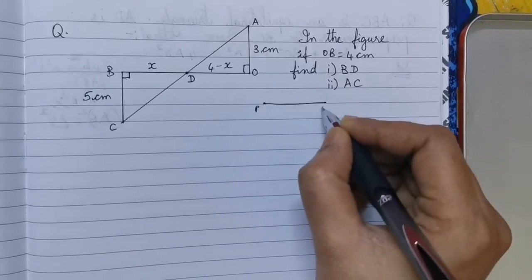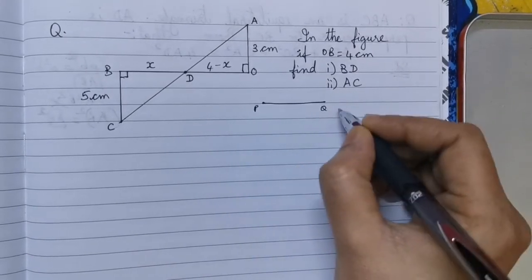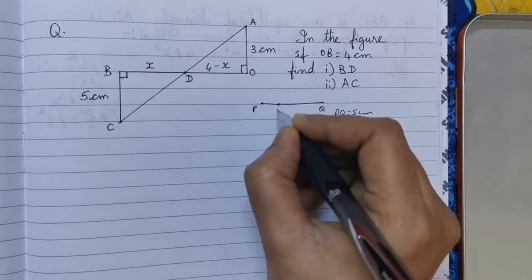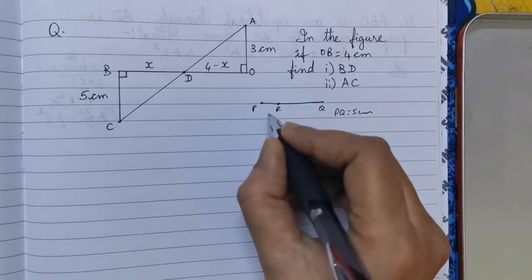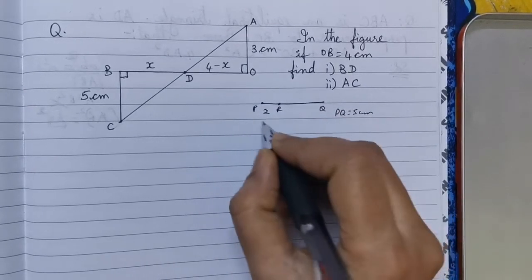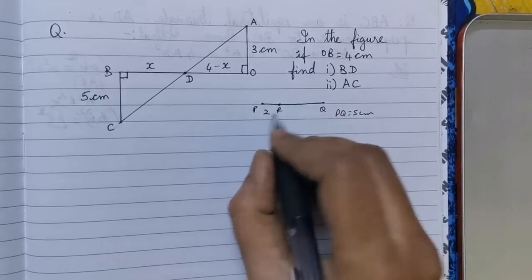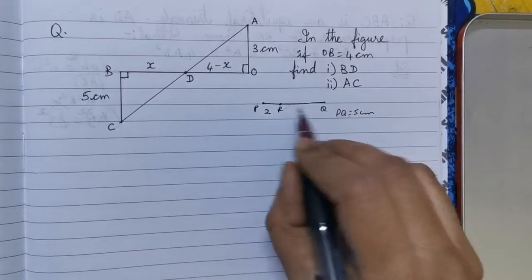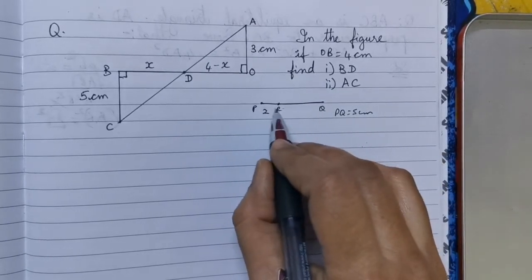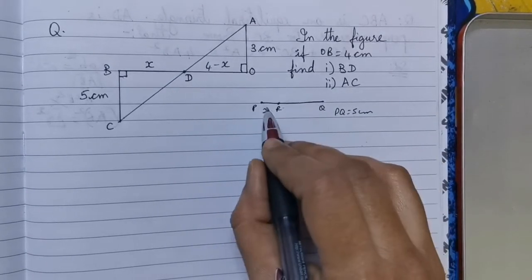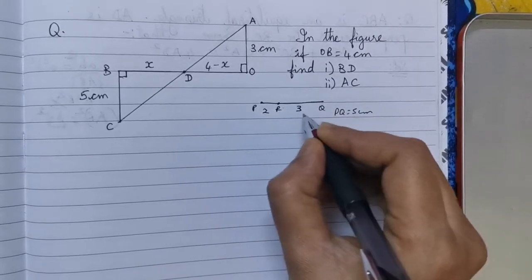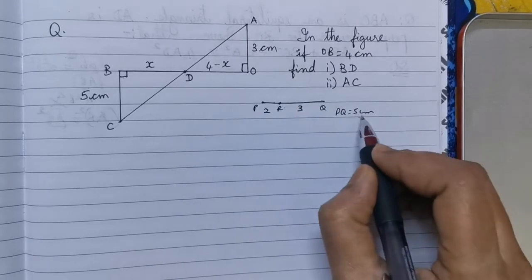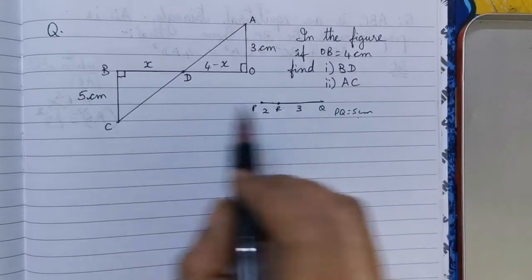For example, I have a line PQ which is equal to 5 cm and I have a segment PR which is 2 cm. If PR is 2 cm, RQ will be the remaining part of 5 cm. Out of 5 cm, this part is gone — 5 minus 2 which is 3 cm. So this 2 cm plus this 3 cm gives me 5 cm. The same concept.